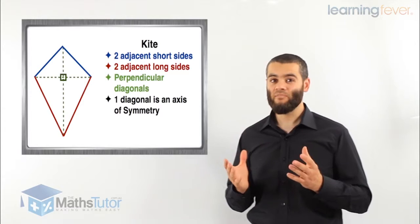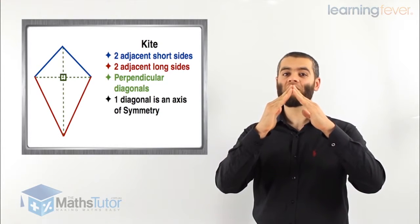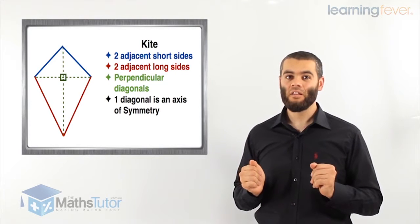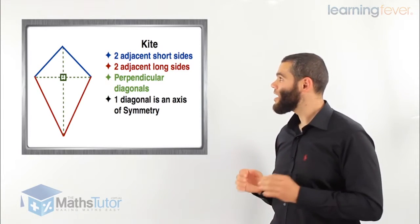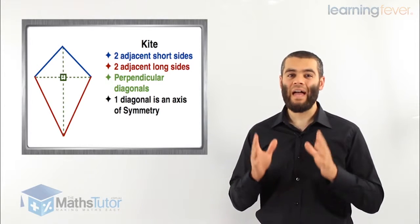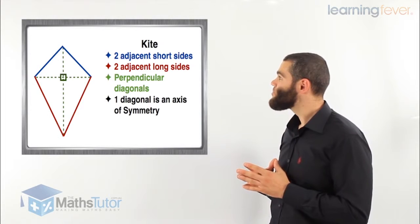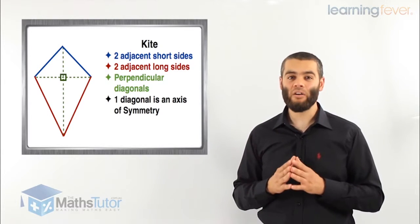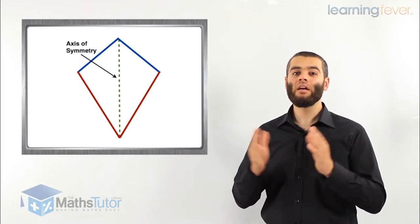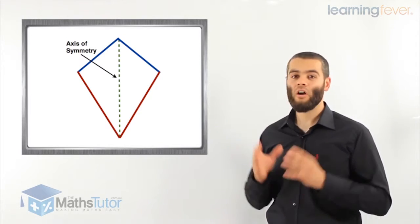Then we have the kite. The kite has two adjacent short sides marked in blue, and two adjacent long sides marked in red. Its diagonals are perpendicular, meaning they cut each other at right angles — at 90 degrees — as marked in green. It also has one diagonal that is an axis of symmetry, meaning it cuts the shape in half as a mirror image, going straight down the middle.